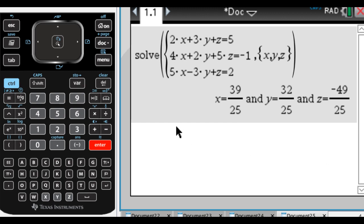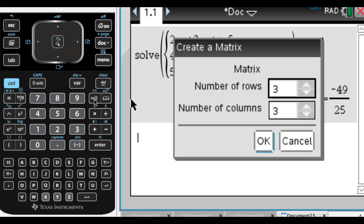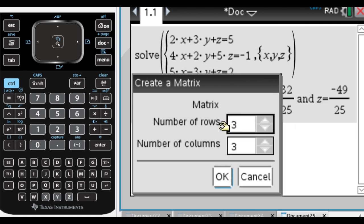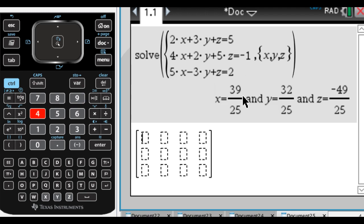So what I can do instead, is I can create a matrix. This isn't exactly the order in which I would do it, but I don't know, I'm trying not to spoil this. So my matrix is going to need to have three rows, so that's one for each equation, kind of. And then it needs to have four columns, so one column for each of the variables, and one for the constant terms. So I need three rows, and I need four columns.